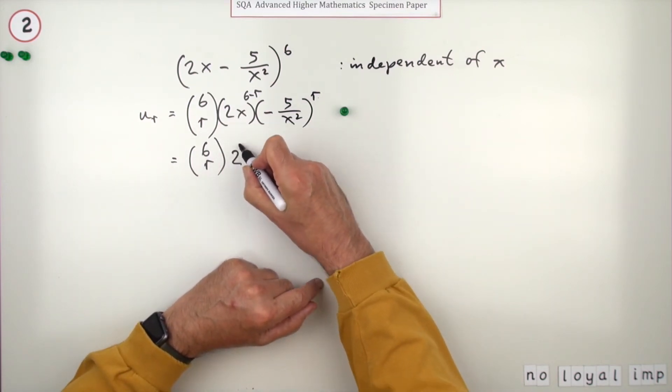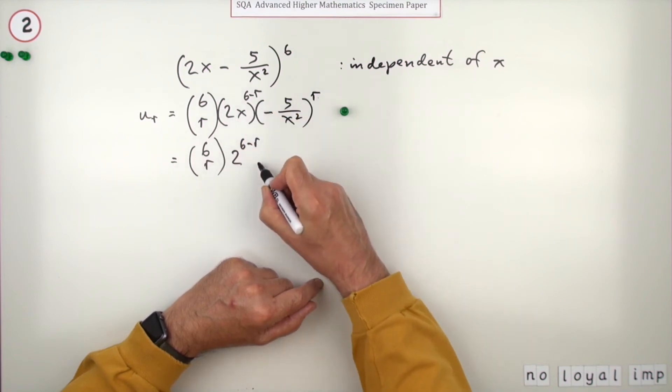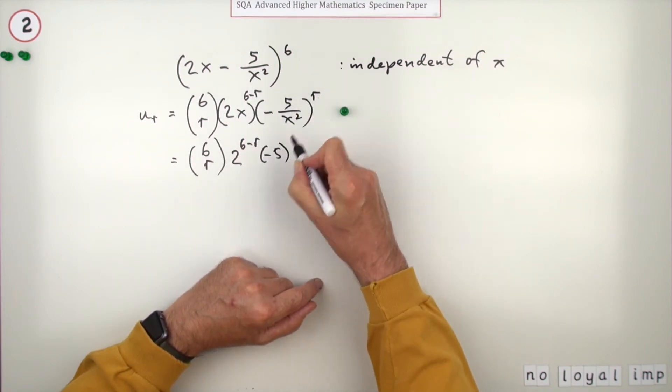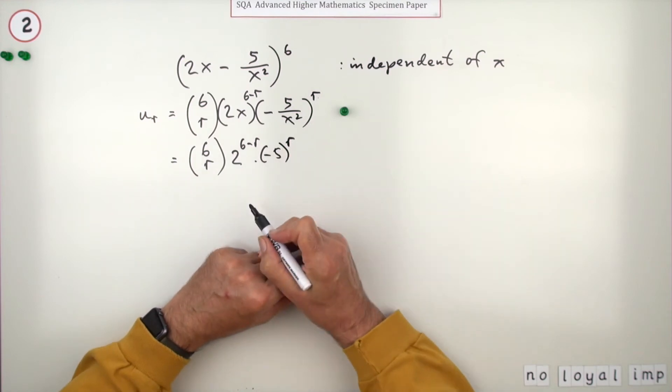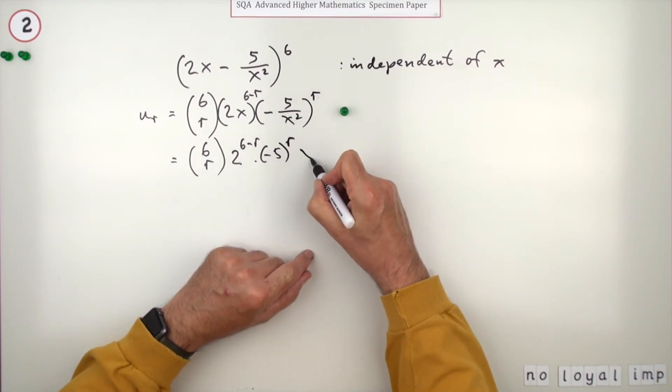So the numbers are: there's a two which is to the power 6 minus r, there's also a negative five which is to the power r. Not much I can do with those. And then the x terms...